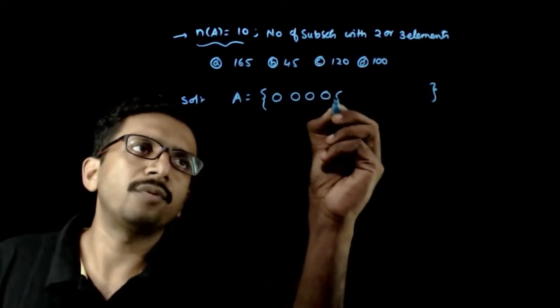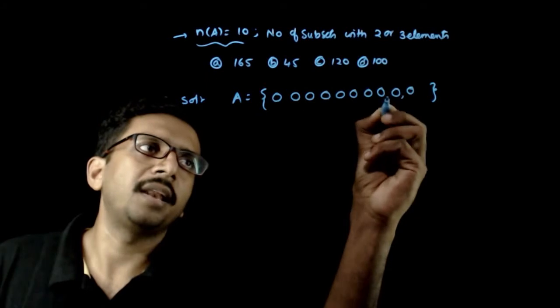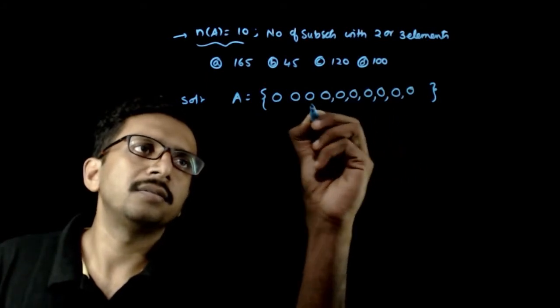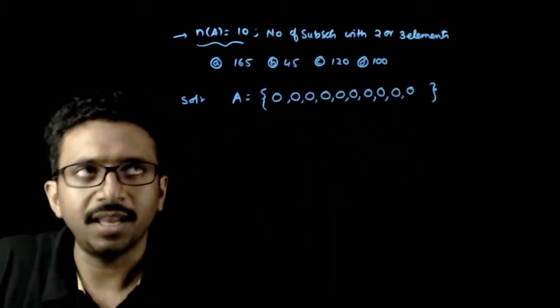1, 2, 3, 4, 5, 6, 7, 8, 9, 10. A is a set containing 10 elements.